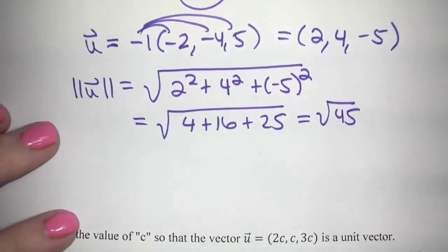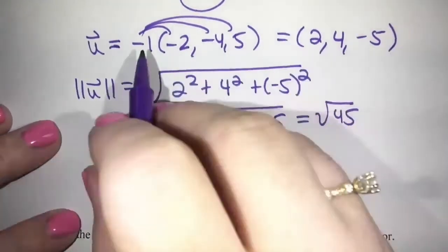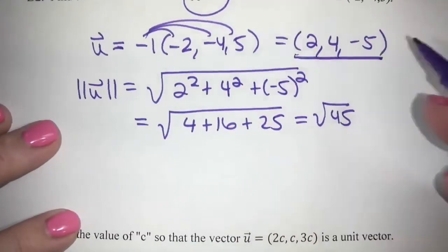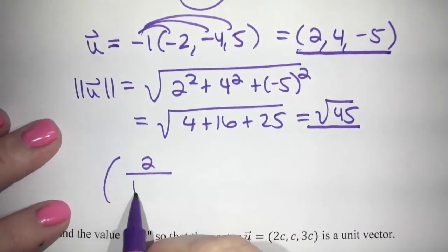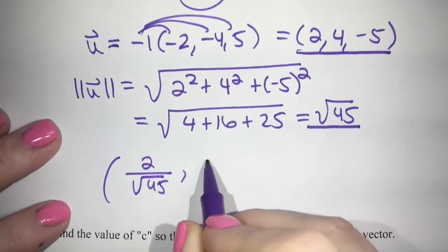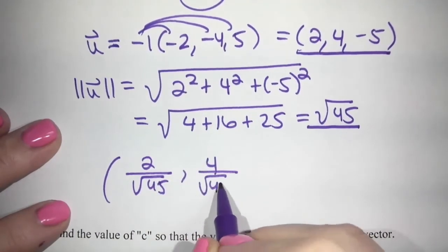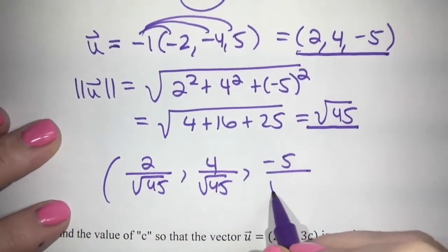So what would your final answer be here? So we'd have to take our U, which we've switched our signs. So this is our new vector, and divide by the magnitude. So our final answer would be two over root 45, four over root 45, and negative five over root 45.